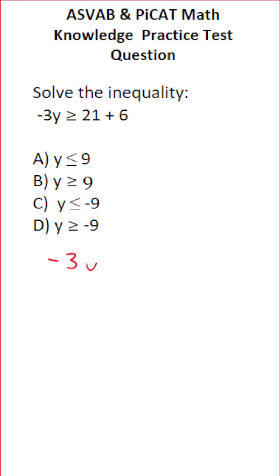We have negative 3y greater than or equal to 21 plus 6. To get started, we can combine 21 and 6. 21 and 6 is going to be 27.